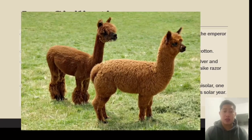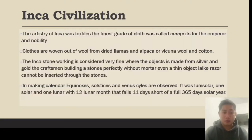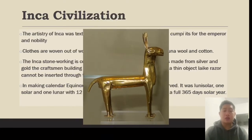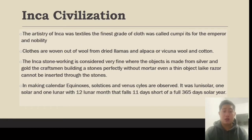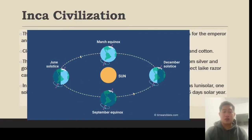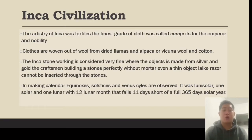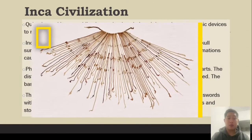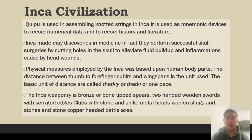The artistry of the Inca was centered on textile work. The finest grade of cloth was called cumbi, reserved for the emperor and nobility. Clothes were woven from wool of llamas, alpaca, or vicuña, and cotton. Inca stoneworking is considered very fine; objects made from silver and gold were crafted by skilled artisans who fitted stones perfectly together without mortar — so precisely that even a thin object like a razor cannot be inserted between the stones. The Inca calendar observed equinoxes, solstices, and the Venus cycle. It was lunisolar — one solar and one lunar — with 12 lunar months that fall 11 days short of the 365-day solar year.